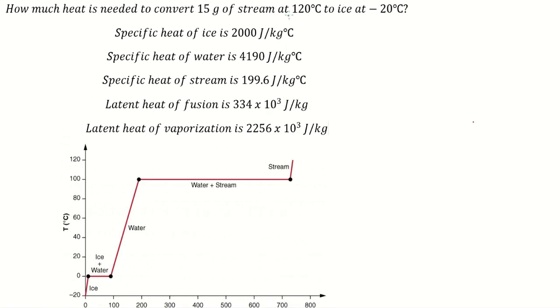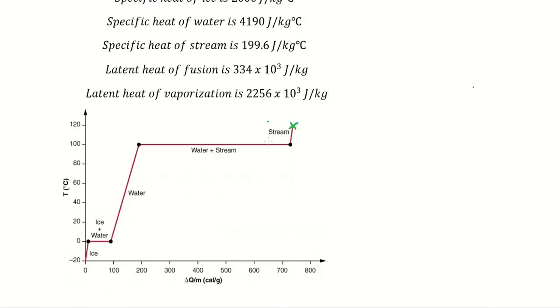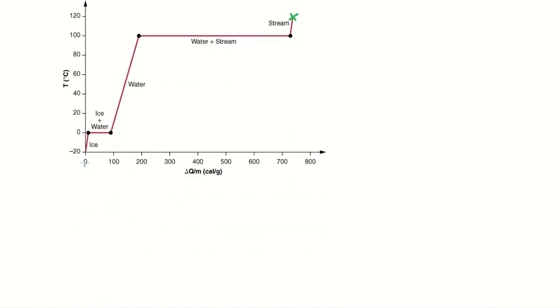So we add 120 degrees. That is about this point here. Then we need to find how many hits to convert the stream into the ice. That is about this number in here.